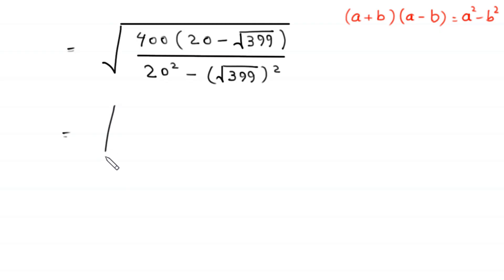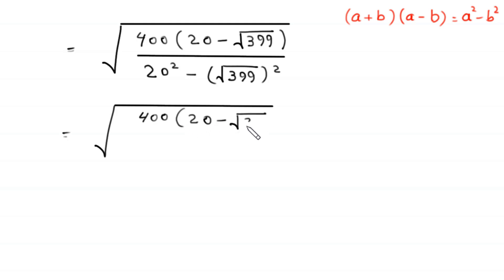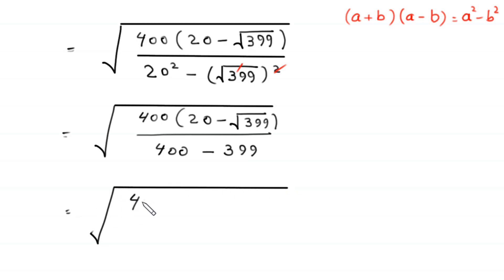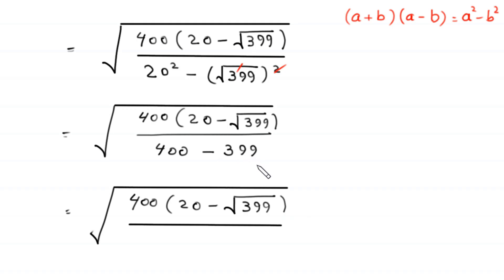We have square root of 400 times 20 minus root 399, divided by 20 squared which is 400. The square cancels with the square root, leaving negative 399. So the denominator becomes 400 minus 399, which equals 1.